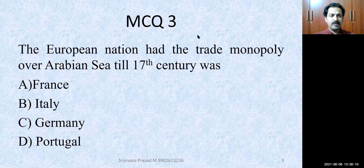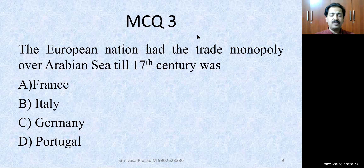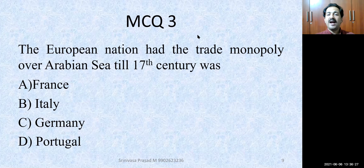Third MCQ: The European nation that had trade monopoly over the Arabian Sea till the 17th century — those who have read the textbook can easily answer this. Till the 17th century, Italy had monopoly over the Arabian Sea trade route.